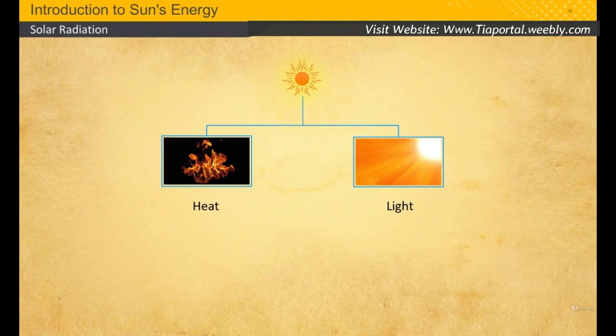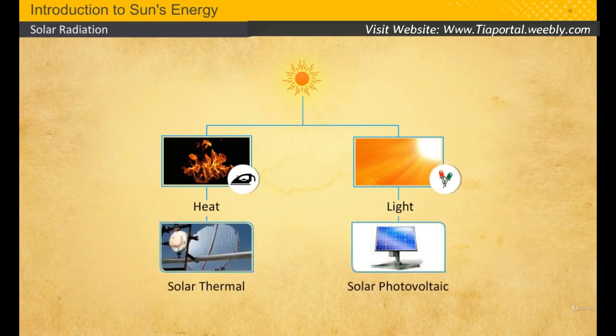This can be understood from the fact that an electric press emits radiant heat only for ironing clothes, while an LED bulb emits mostly light energy. Solar photovoltaics technology, or solar PV technology, converts light energy into electricity.